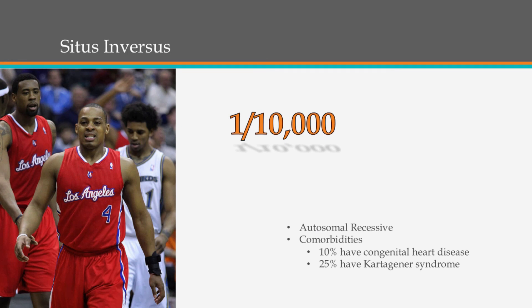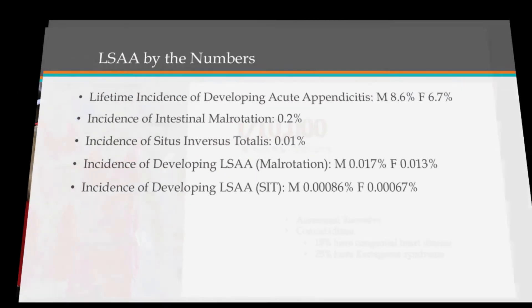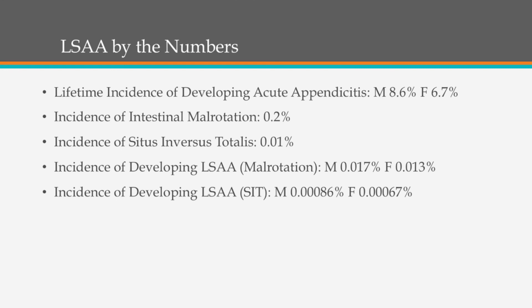Let's talk a little about situs inversus. As I was saying, it's an autosomal recessive condition where your whole body is pretty much mirrored upon itself. About 10% have Kartagener's syndrome, which is primary ciliary dyskinesia — more of a cellular-level condition that causes infertility and lung problems. This here is Randy Foy, one of the more famous people with the condition — he's a basketball player.